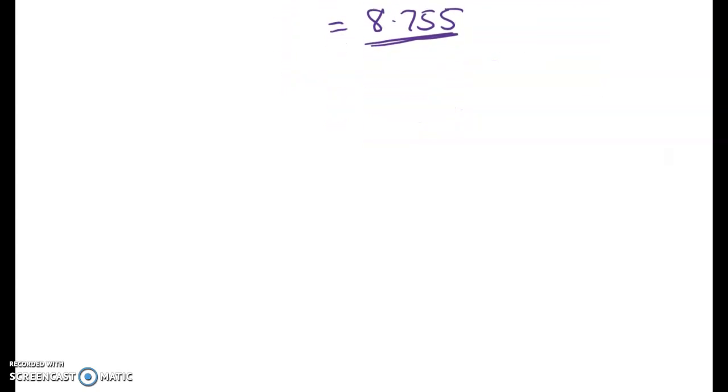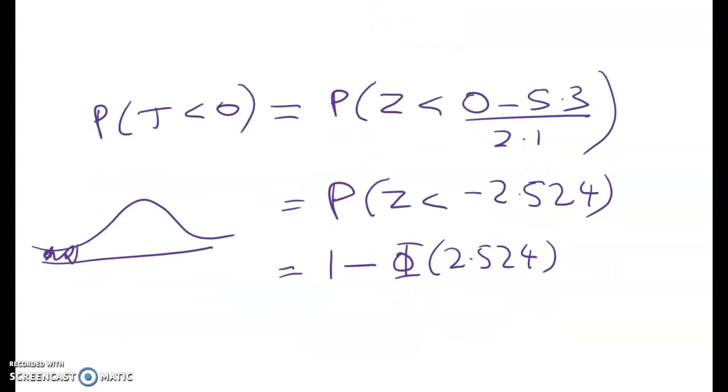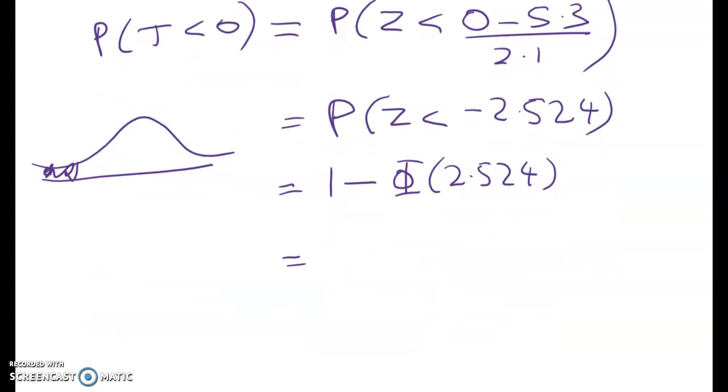It's kind of surprising that they put this in but there you go. So the probability that she misses the bus is the probability that t is negative which is the probability that z is less than 0 minus 5.3 over 2.524. And that's this area back here which is 1 minus phi of 2.524 which is a very very little number overall that works out to be 0.0058.